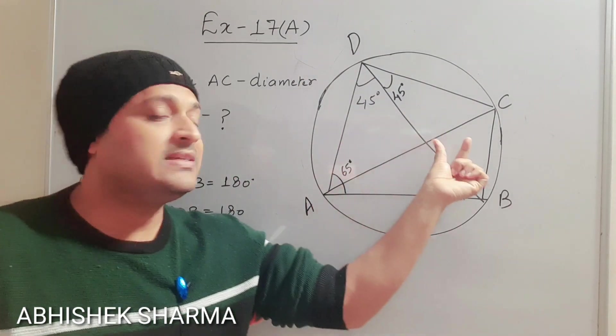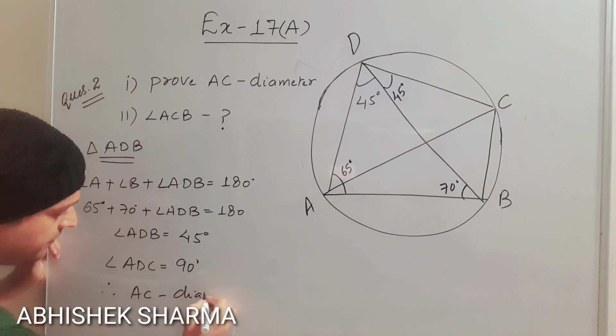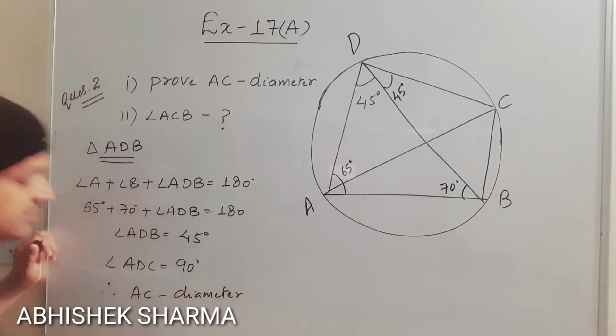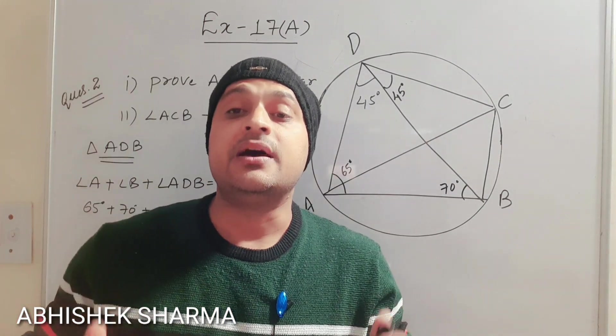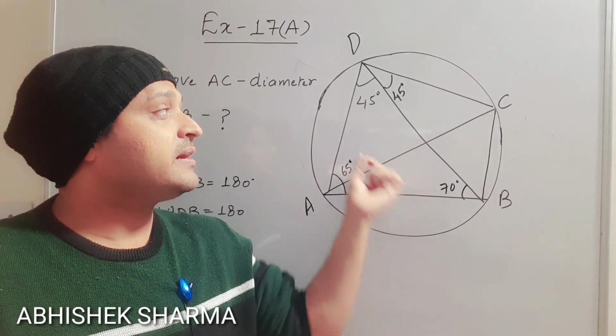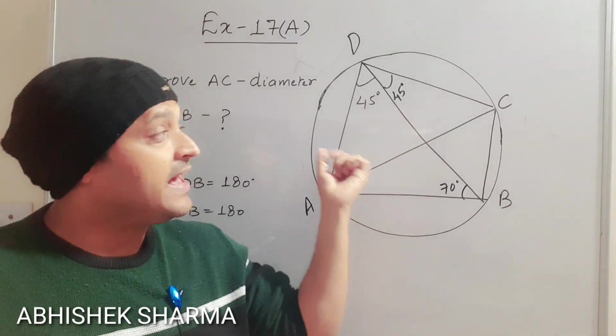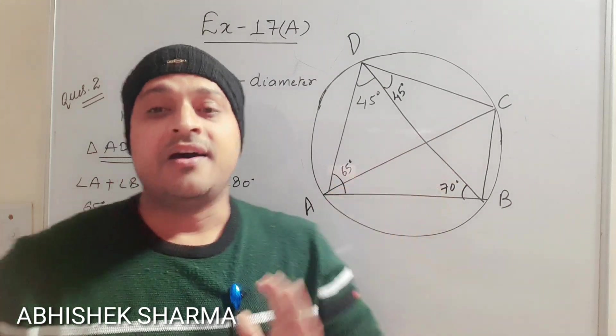Obviously AC is diameter. So we can say hence AC is diameter we have proved. So this is the converse of the theorem. Again I am repeating converse of the theorem. Theorem is that angle at the semicircle is 90 degrees. When the angle is 90 degrees then this is the diameter here.